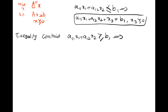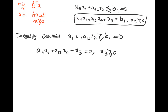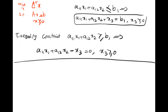What if the constraint is greater than or equal, like a11*x1 + a12*x2 ≥ b1? In this case we subtract a positive variable x3 from the left side to transform the inequality into an equality: a11*x1 + a12*x2 - x3 = b1.